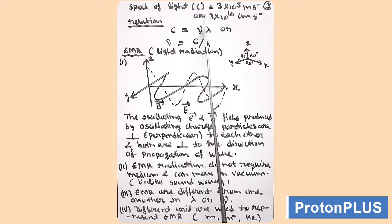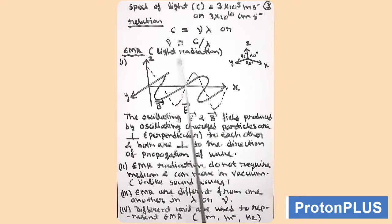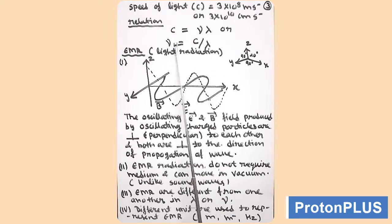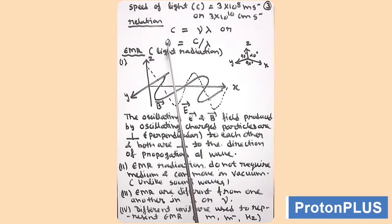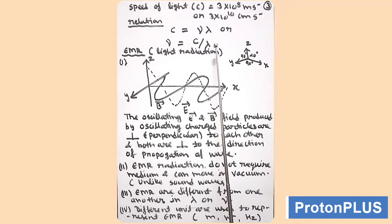C is constant for light, so nu and lambda are inversely proportional to each other. For any radiation, if frequency increases, then wavelength decreases.